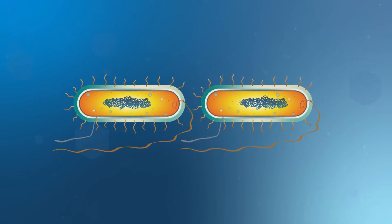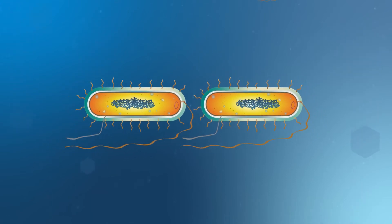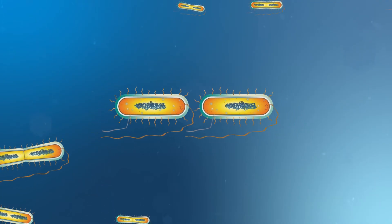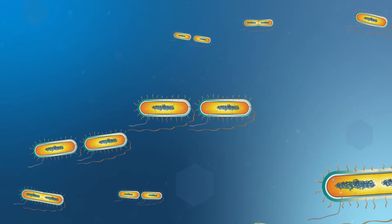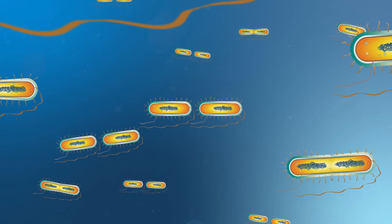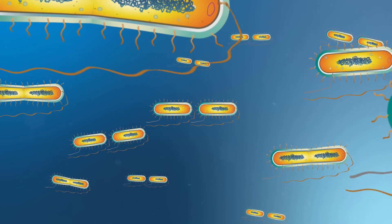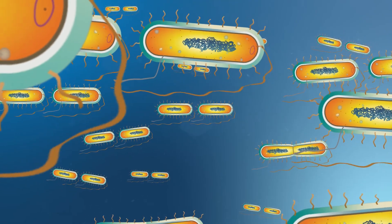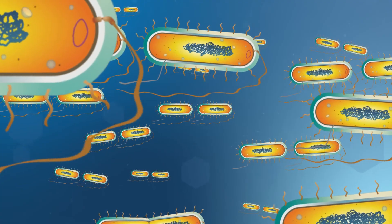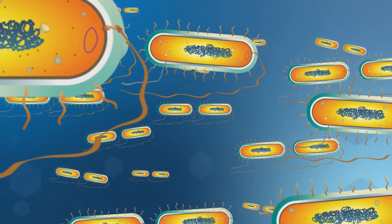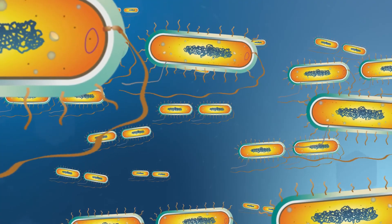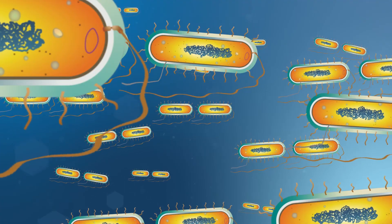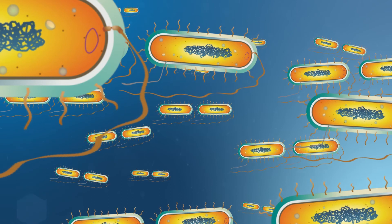The cell continues to divide until it completely separates into two individual cells. Many bacterial cells can undergo this process of binary fission in a matter of minutes, while most eukaryotic cells take at least a day to go through cell division. This difference occurs because bacterial cells are smaller and lack organelles and complex replication machinery. Bacterial enzymes function at a faster rate than comparable eukaryotic enzymes, making binary fission and other bacterial processes fast and efficient, allowing bacteria to respond rapidly to their environment.